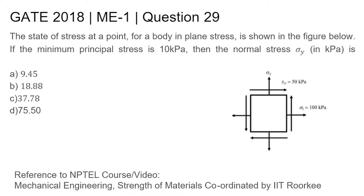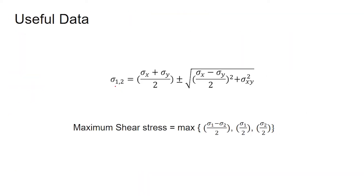You can also refer to the NPTEL course Mechanical Engineering Strength of Materials coordinated by IIT. Before moving to the video solution, we need to know some useful data. The principal stresses σ1 and σ2 equal to (σx + σy)/2 plus or minus the square root of ((σx − σy)/2)² + τxy². Here, for σ1 it is plus and for σ2 it is minus.